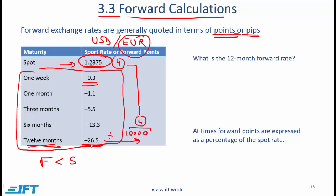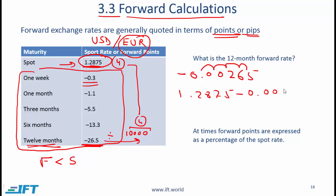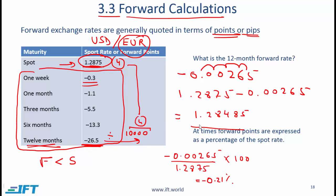What do we get when we divide 26.5 by 10,000? You move the decimal place back four places — one, two, three, four — so this is the number in decimals. Since we have a minus here we also put a minus. We subtract this from 1.2875: 1.2875 minus 0.00265, and this gives us the forward rate. Notice the forward rate is lower than the spot rate by this amount.